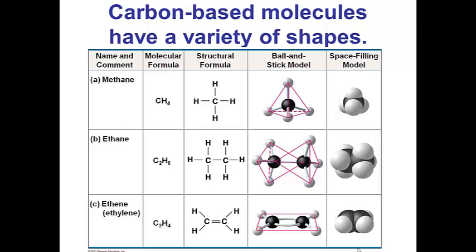These structures allow carbon-based molecules to take on a variety of shapes. First we see methane. Methane is carbon covalently bonded to four hydrogens and we can see here that it forms a tetrahedral shaped molecule.